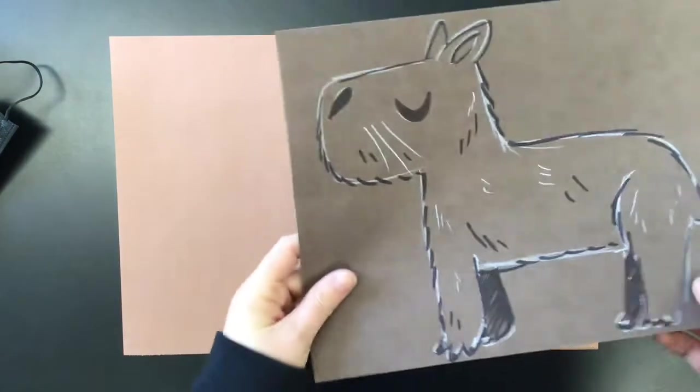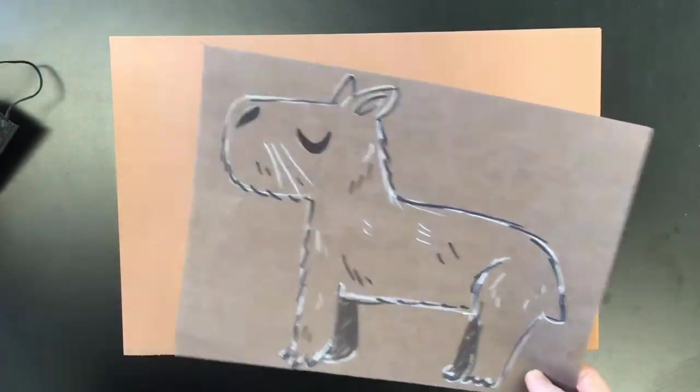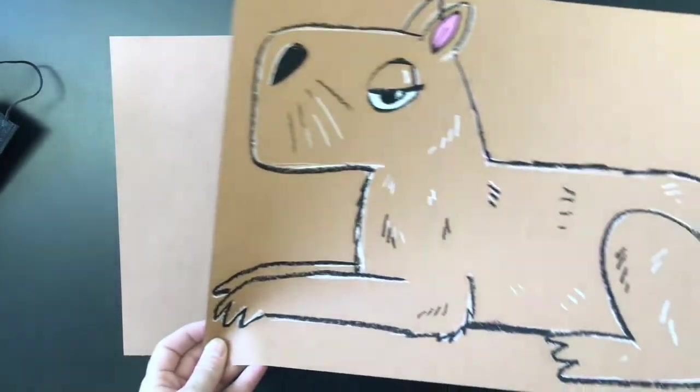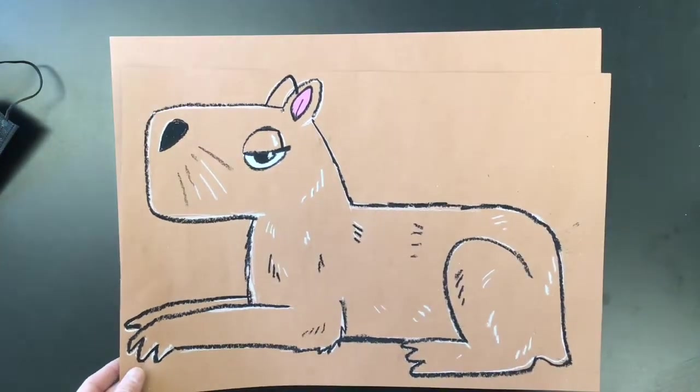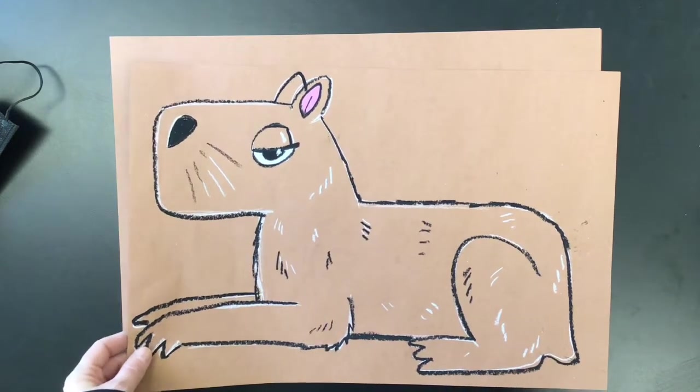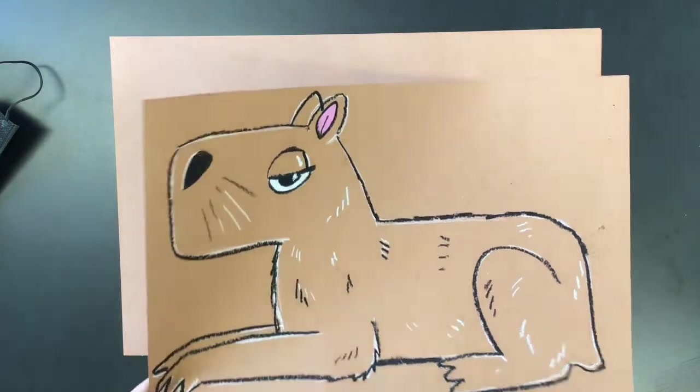Hi boys and girls, today we are going to make the adorably cute unbothered capybara that is all over the movie Encanto. This little guy is the world's biggest rodent and they are found in the Amazon, which is perfect for our rainforest theme. So we're going to go ahead and make some capybaras today.